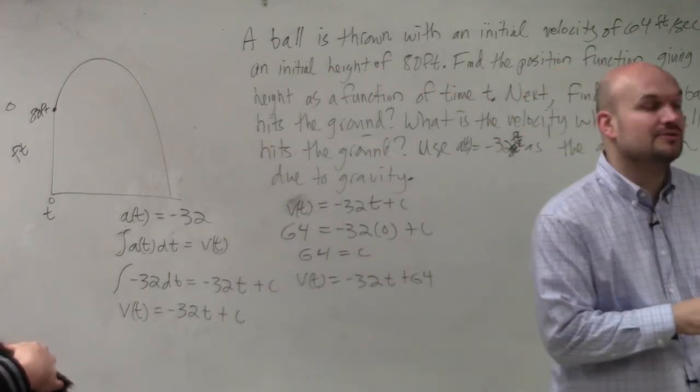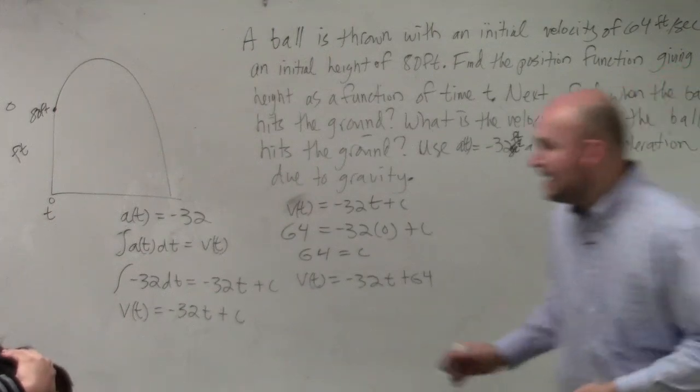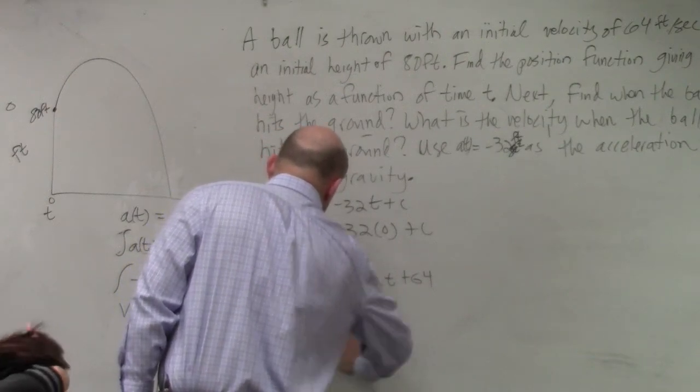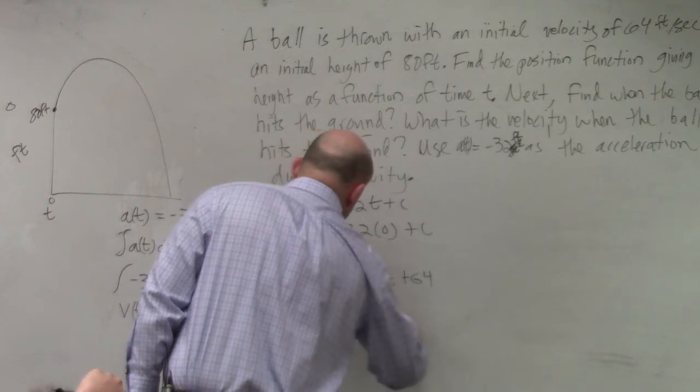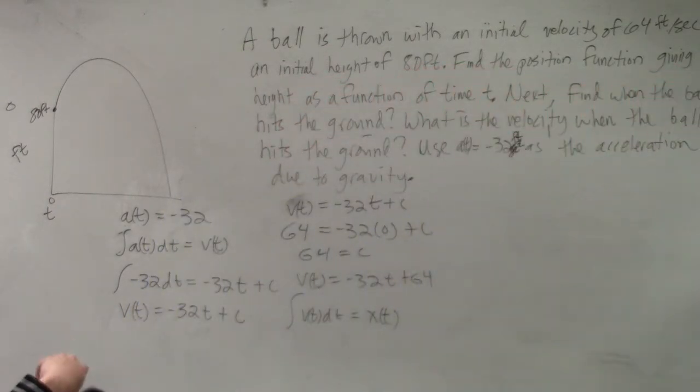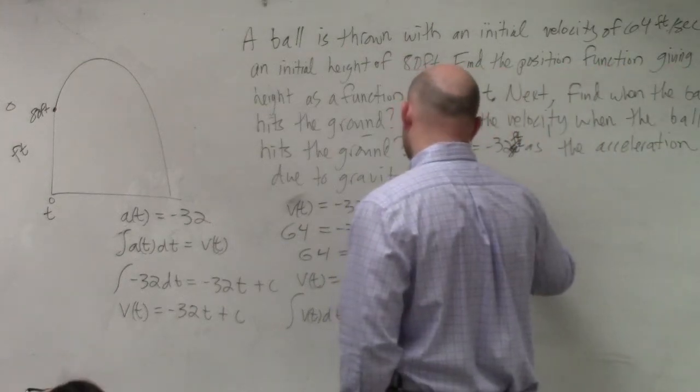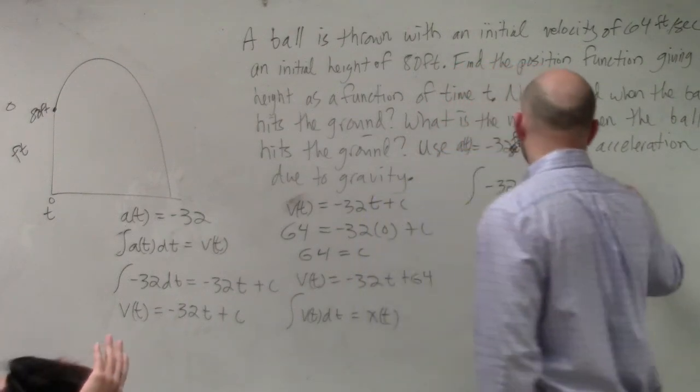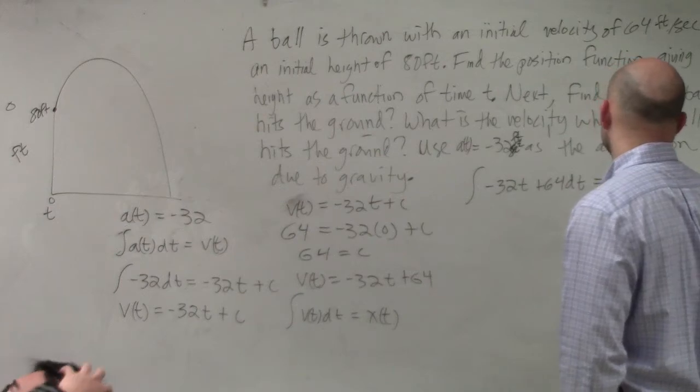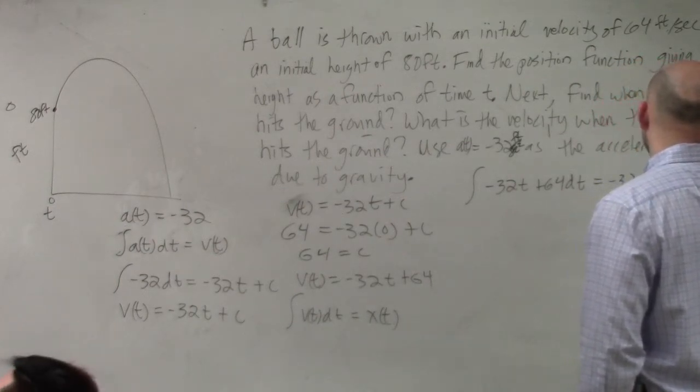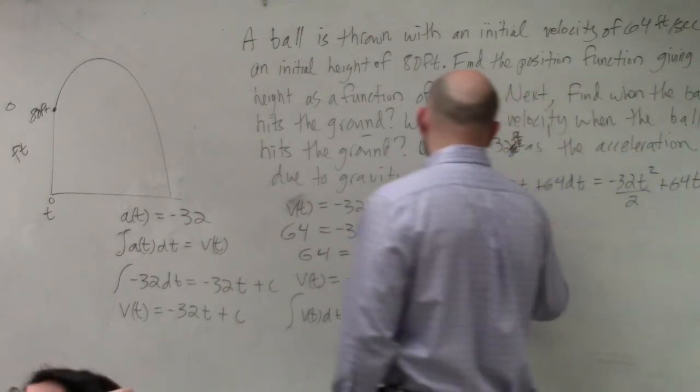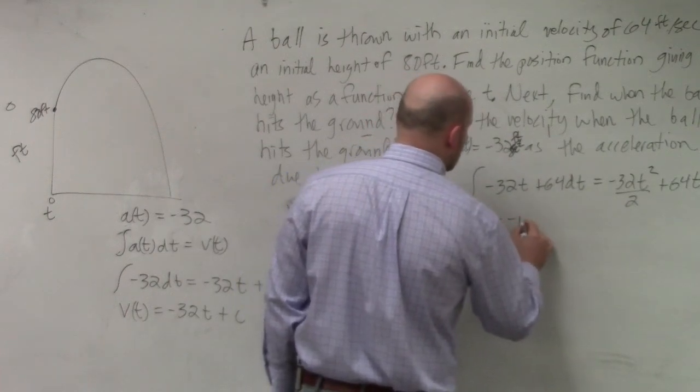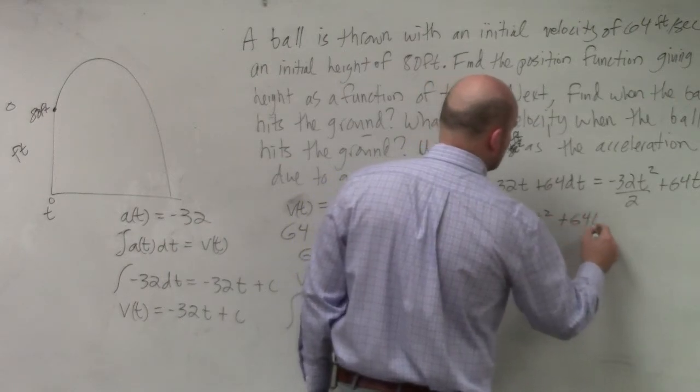But again, we're not looking for velocity. We're looking for the position function. So now I need to integrate my velocity function to obtain my position function. So if I go ahead and integrate negative 32 t plus 64 d sub t, I end up getting negative 32 t squared divided by 2 plus 64 t plus c. So therefore, I could say my position function x of t equals negative 16 t squared plus 64 t plus c.